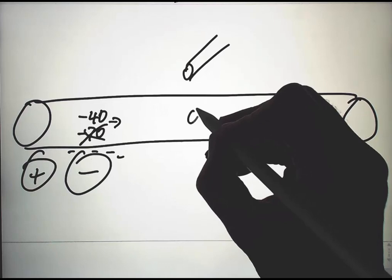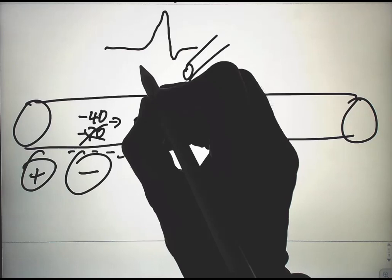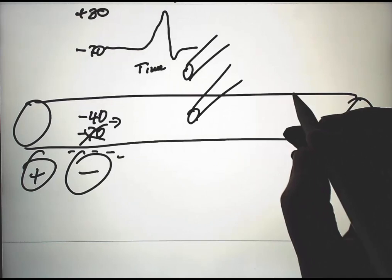If we measure inside and outside, then an action potential looks like the trace we keep talking about in class, like this, with time minus 70 and about plus 30.